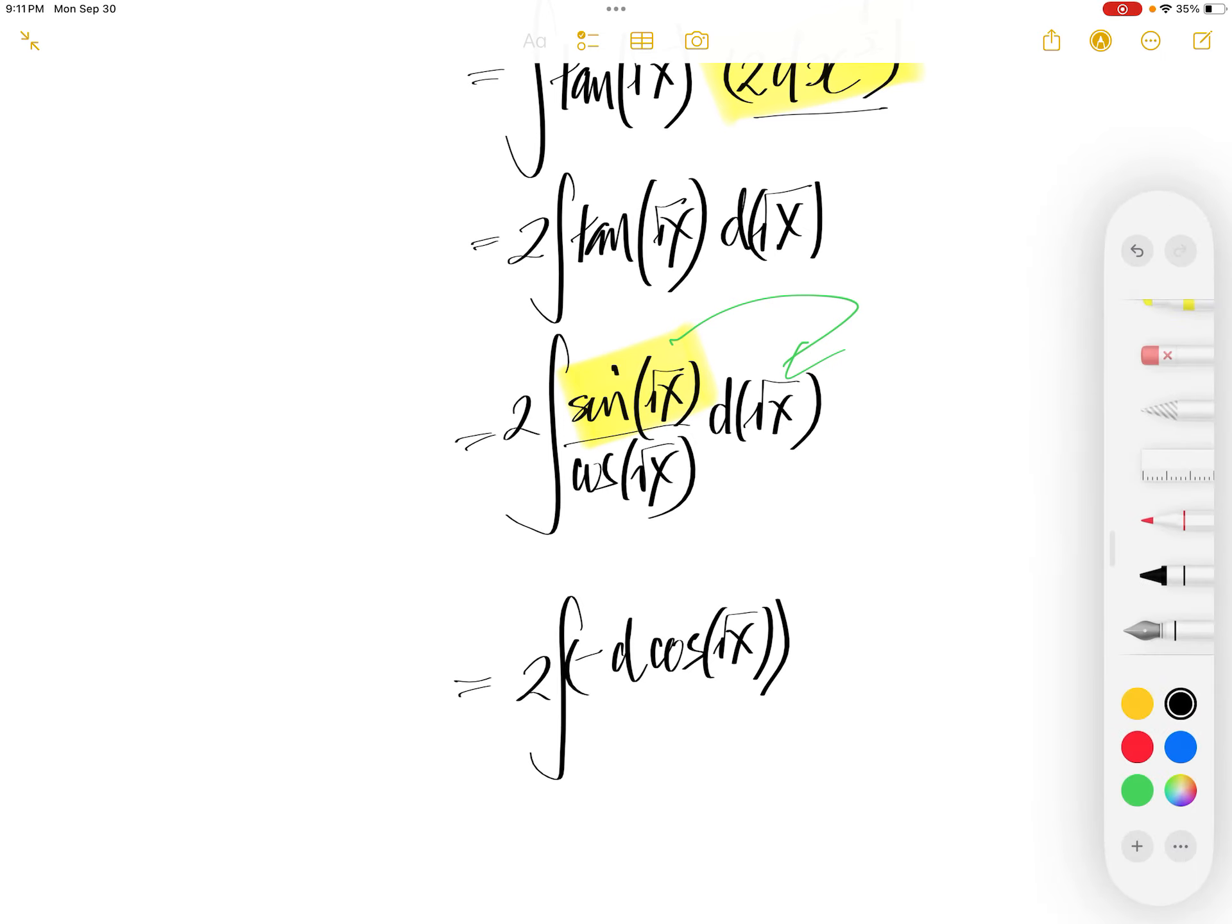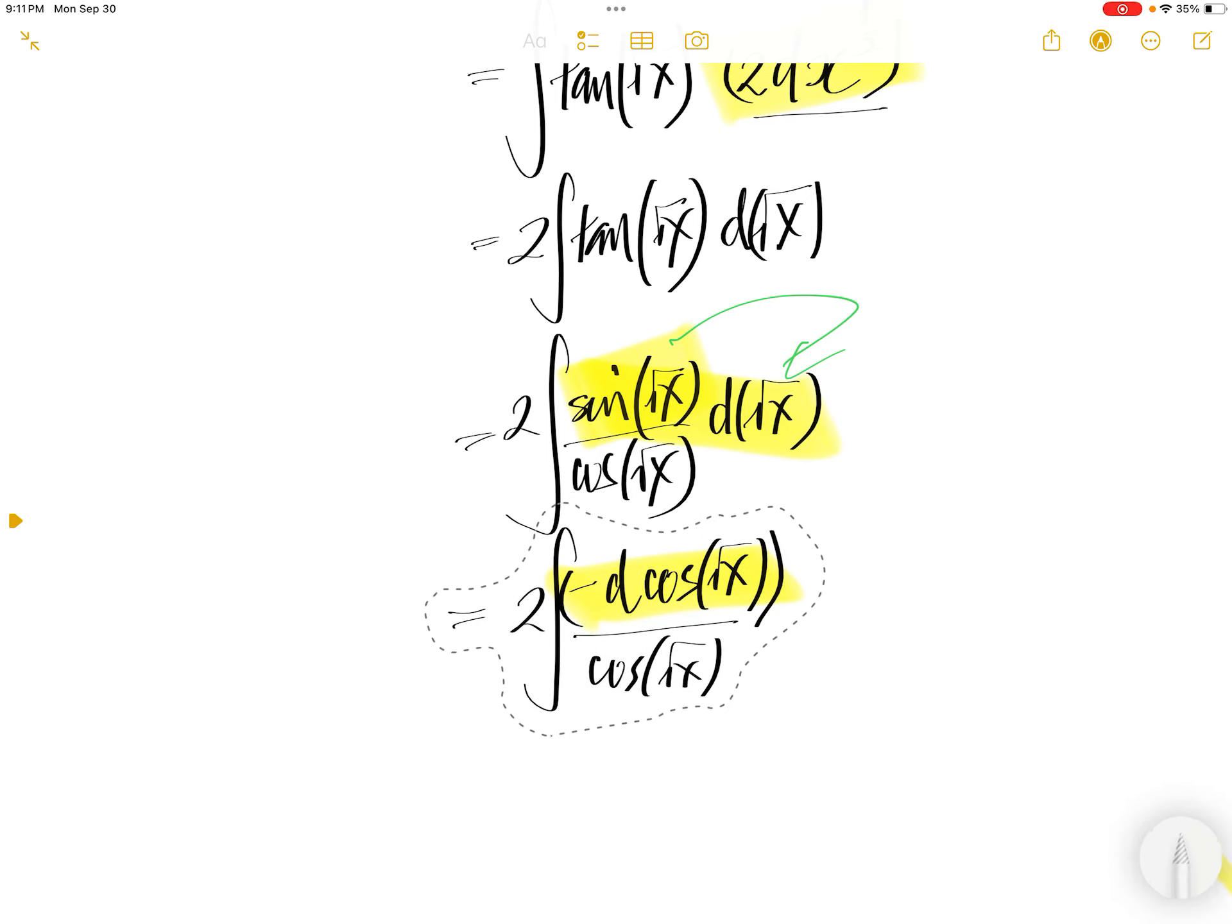So you need a negative one out of the integral and multiply with 2. You get negative 2, d cos square root x over cos square root x.